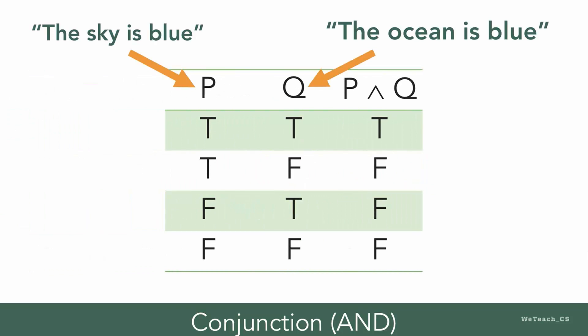The resulting truth table of P conjunction Q looks like this. Notice how we've employed our convention for the first column, assigning the first half of the rows a value of true and the second half false. The second column alternates true and false. Notice that P and Q is only true when both parts are true.